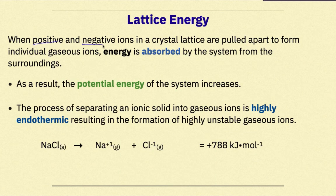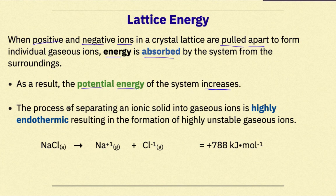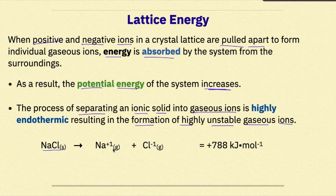When positive and negative ions in a crystal lattice are pulled apart to form individual gaseous ions, energy is absorbed by the system from the surroundings, and the potential energy of the system increases. The process of separating an ionic solid into gaseous ions is highly endothermic, resulting in highly unstable gaseous ions. Going from NaCl solid to forming sodium ions and chlorine ions requires a large amount of energy to overcome the forces of attraction between these ions.